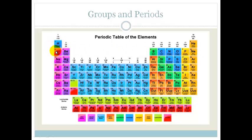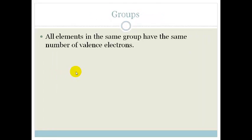Periods, the horizontal rows are periods. So 1, 2, 3, 4, 5, etc. So all the elements in the same group have the same number of valence electrons. Valence electrons are the electrons found in the outer energy level.